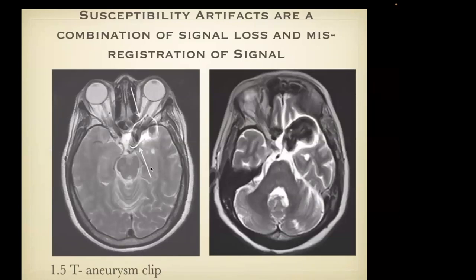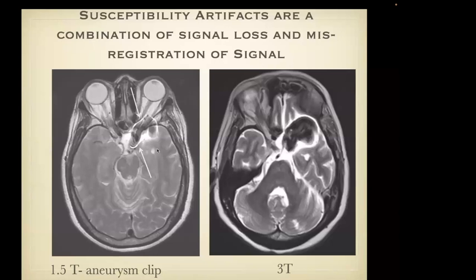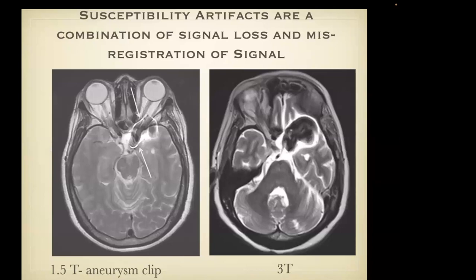Susceptibility artifacts are something you should be familiar with. Here is the same patient with an aneurysm clip imaged at 1.5T and at 3 Tesla — look at the size of the artifact at 3 Tesla compared to 1.5T. In patients who have metal — for example cervical or lumbar spine imaging after surgery with hardware placement — if you want to maximize your chance of visualizing the spinal canal and minimizing metal artifact, my approach would be to image at 1.5T if you have a choice, and to use fast spin echo T2.